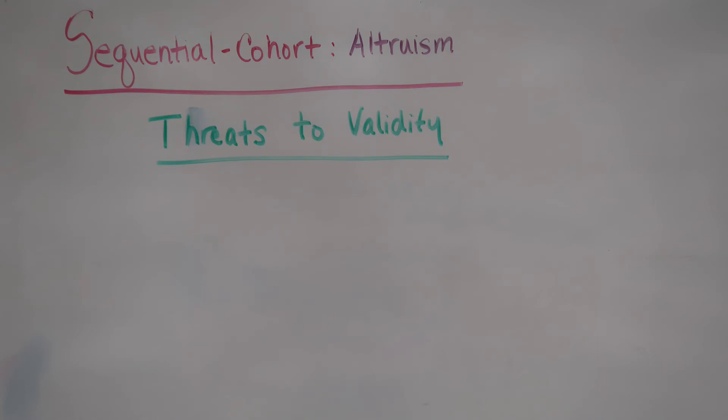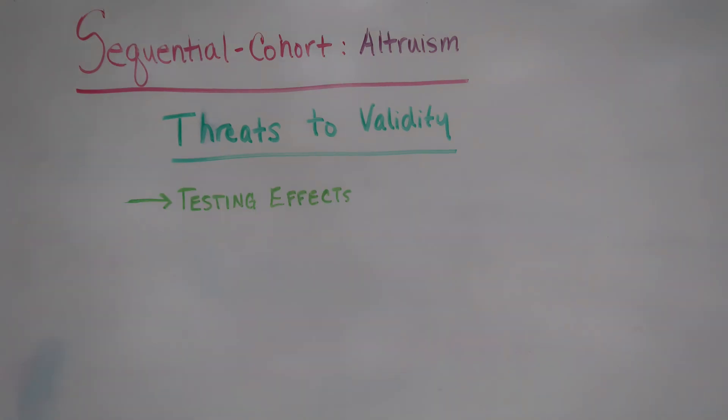Various threats to validity include testing effects. They remain an issue as participants are tested multiple times over a six year period. We could combat this with the creation of a different equally weighted version of the altruism questionnaire.